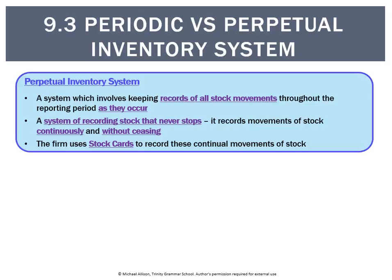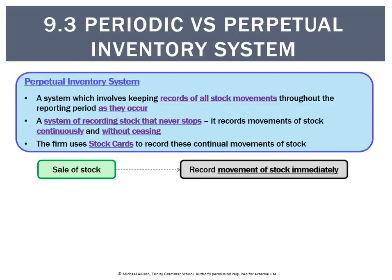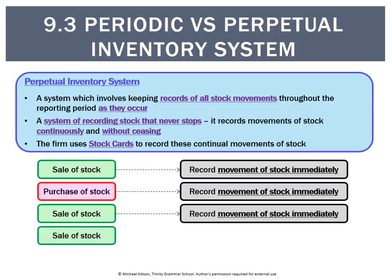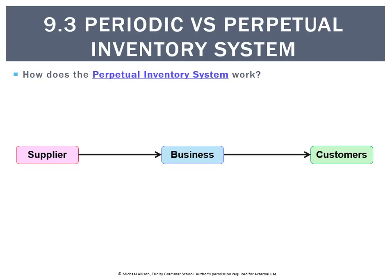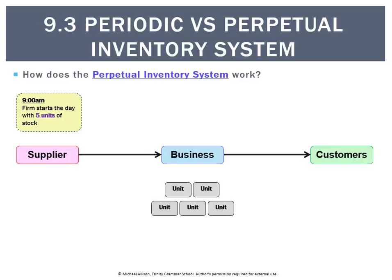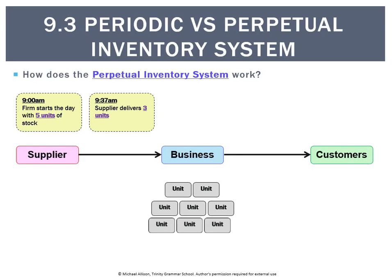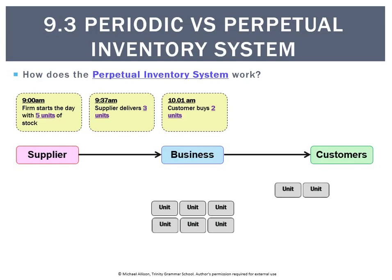Using stock cards, this system works like this: if there's a sale of stock right now, we record it straight away. If there's a purchase of stock, we record it immediately. We're always updating our stock records. So say we open the shop today at nine o'clock with five units on hand. At 9:37 a supplier delivers three more units — we update our records and know we have eight units on hand. At 10:01 a customer buys two units — we update our perpetual inventory system straight away and it tells us we have six left.